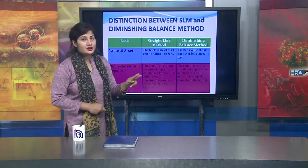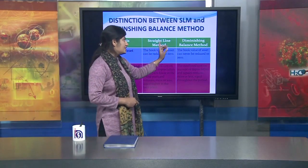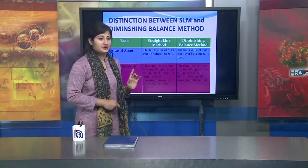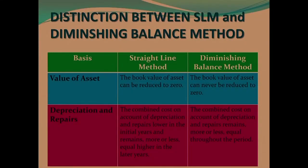In SLM, the combined cost of depreciation and repairs is lower in initial years and higher in later years, making it unequal. But in the Diminishing Balance Method, the combined cost of depreciation and repairs remains more or less equal throughout the period — higher depreciation initially offsets lower repair costs, and vice versa. These are the basic differences between the SLM method and the Written Down Value method.